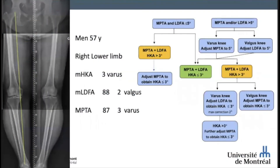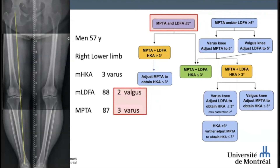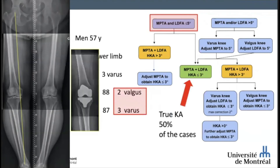Let's see some case examples. Here is a 57-year-old man with an HKA of 3 degrees, with a LDFA of 2 degrees valgus and an MPTA of 3 degrees varus. Both LDFA and MPTA are within RKA boundaries of a maximum of 5 degrees. The arithmetic sum of LDFA and MPTA equals 1 degree varus, which is within the RKA boundary of ±3 degrees. We can proceed with bone cuts without any adjustment — thus we perform a true kinematic alignment in this case, which corresponds to about 50% of the patients we see in practice.